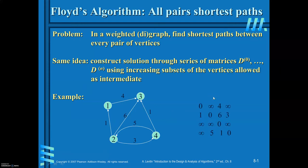First, let us see how to write the cost adjacency matrix for the given graph. From 1 to 1 it is 0, 2 to 2 is 0, 3 to 3, 4 to 4 — all principal diagonal elements will be equal to 0. If there is an edge from vertex i to vertex j, then you have to write the weight assigned to that edge. If there is no edge from vertex i to vertex j, then write it as infinity.